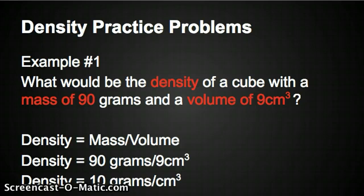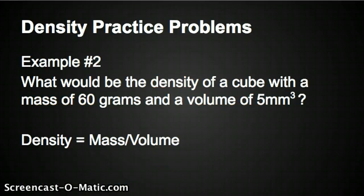Okay, that one I did for you pretty much. This one you're going to do a little bit more yourself, but I'll help you set it up. Example 2. What will be the density of a cube with a mass of 60 grams and a volume of 5 millimeters cubed? The formula's there, density equals mass divided by volume.